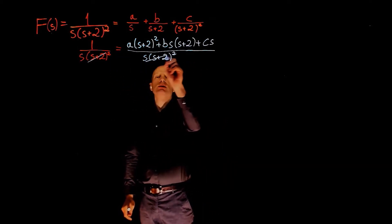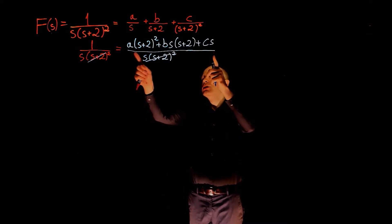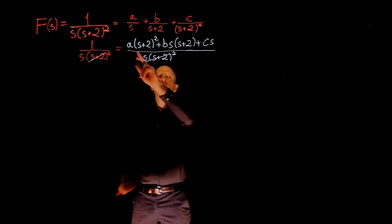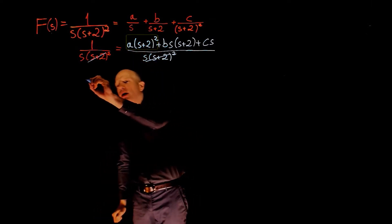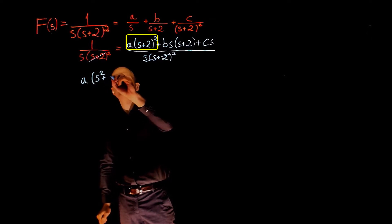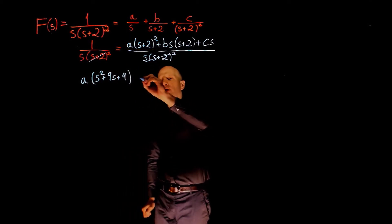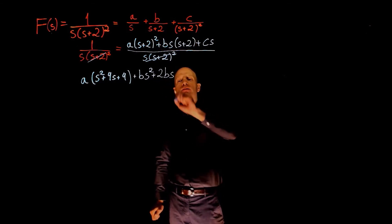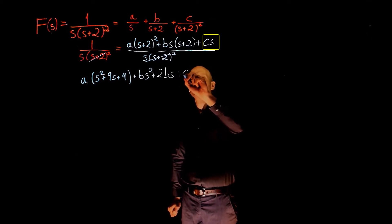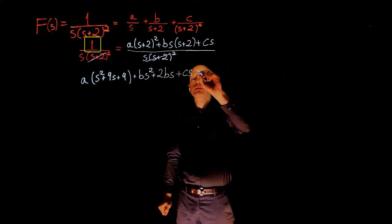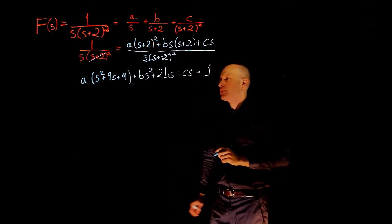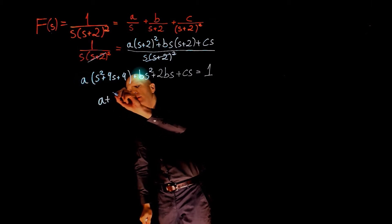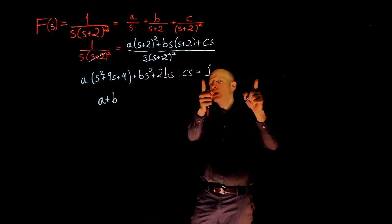The denominators can now be cancelled because they are equal. We can group the terms with s², s, and s to the power of 0. Expanding the top, the first term gives A times (s² + 4s + 4), the second term gives Bs² + 2Bs, and the last term gives Cs, and this is equal to 1. The terms that multiply s² are A and B, so A plus B equals the coefficient of s² on the right side, which is 0.